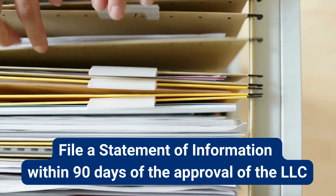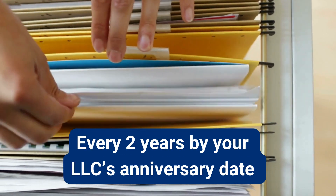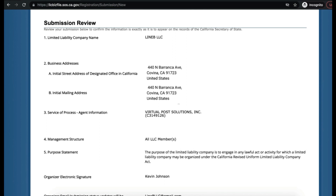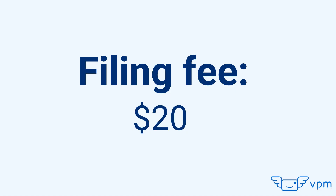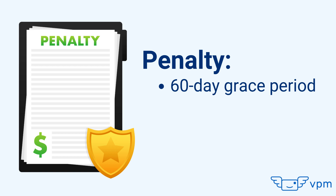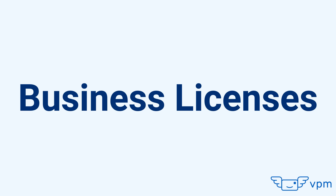Statement of information — this only applies to California and is not needed for your Texas LLC. All California LLCs must file an initial statement of information within 90 days of formation, and then every two years by the LLC's anniversary date. It includes the company's location, the business activity or purpose, and the agreement to pay California tax obligations. The filing fee is $20. The Secretary of State provides a 60-day grace period from the date you're notified. If you fail to file within that period, you must pay a $250 penalty. If you continue to ignore this requirement, the Secretary of State may shut down your LLC.